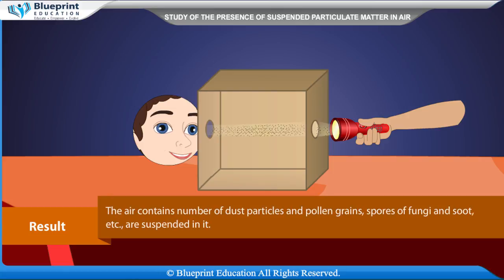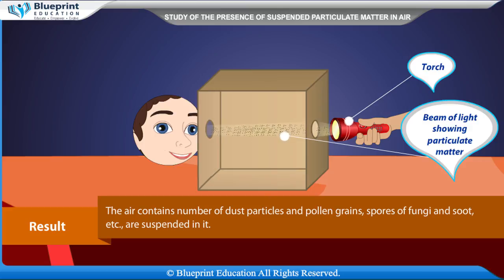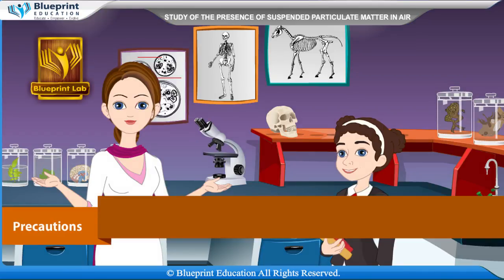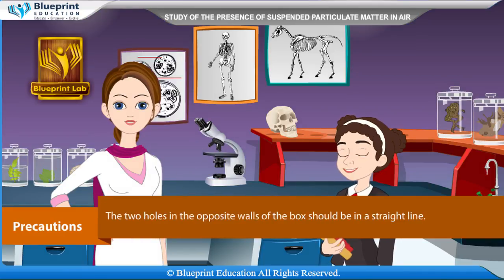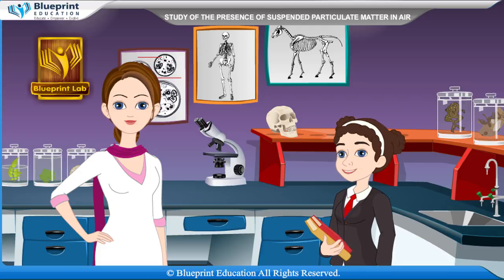The air contains a number of dust particles, pollen grains, spores of fungi, soot, etc., suspended in it. Precautions: The two holes in the opposite walls of the box should be in a straight line. Thank you, ma'am — you have given great knowledge through this experiment.